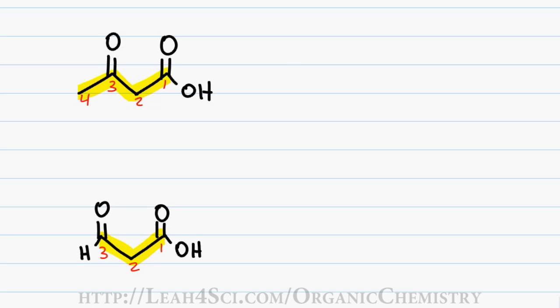The first chain of four carbons gets a first name of but and a last name of ane for only single bonds. The ketone on carbon 3 gets demoted from the own functional group to the oxo substituent for a prefix of 3-oxo, and the carboxylic acid, of course, gets the ending oic acid.